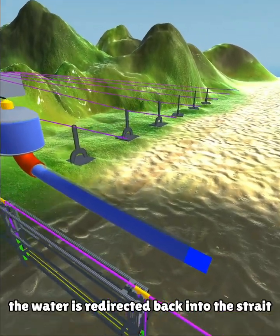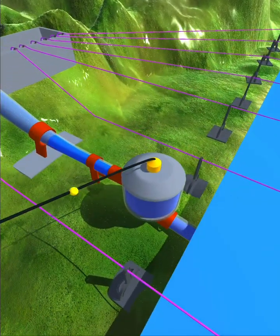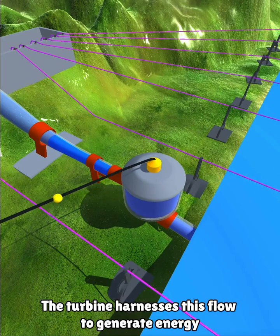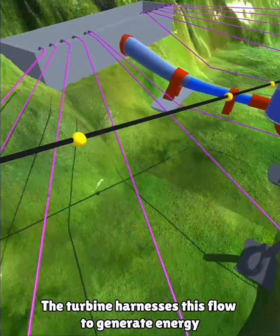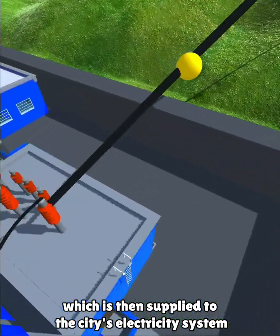Subsequently, the water is redirected back into the strait. The turbine harnesses this flow to generate energy, which is then supplied to the city's electricity system.